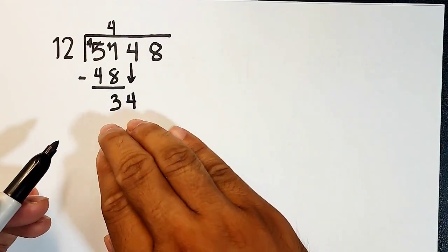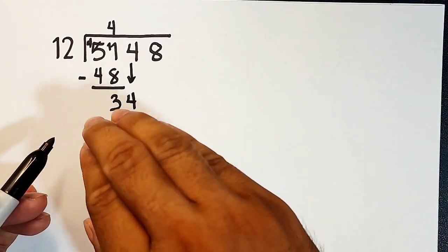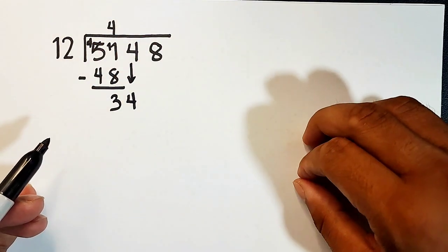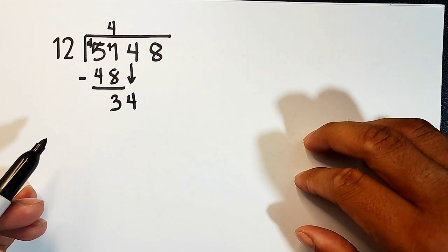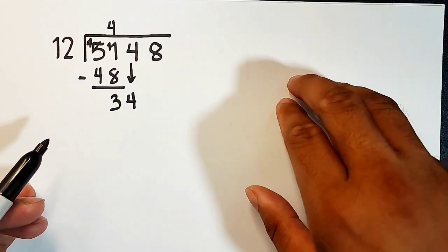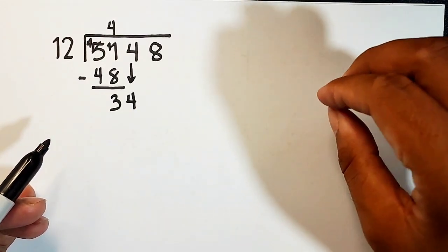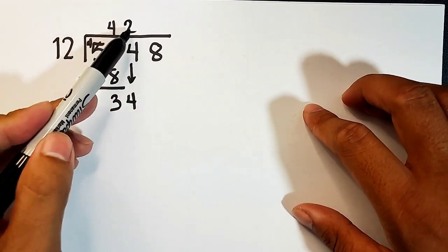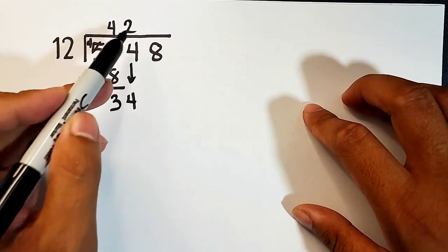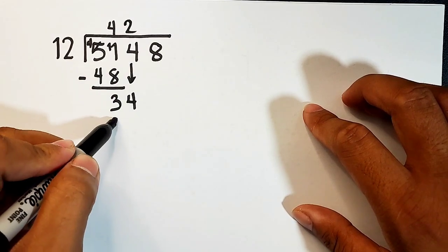So what we have here is we will bring down 4. So here's your new divisor. 34 divided by 12. So if there are 3 twelves, that is 36. So that's more than 34. So it cannot be 3. So definitely this is 2. 2 times 12 is 24.